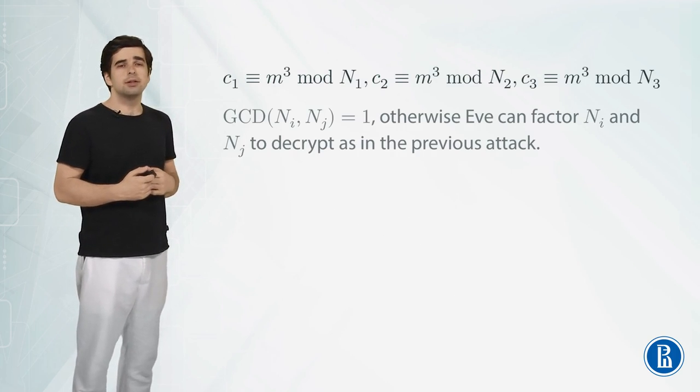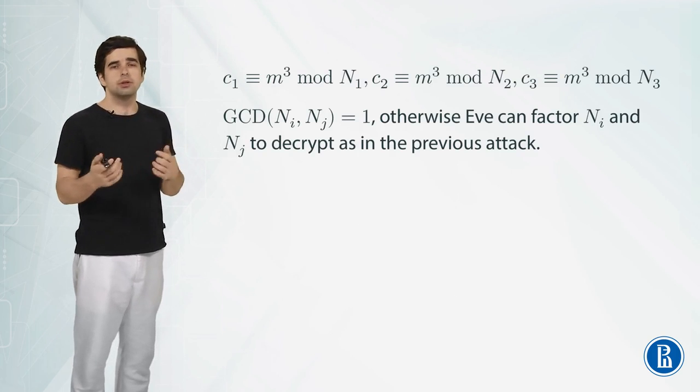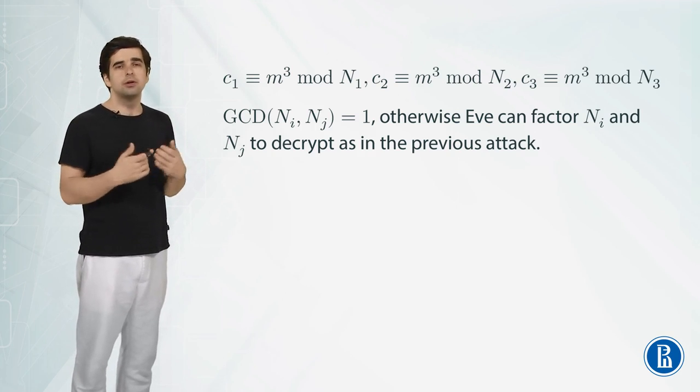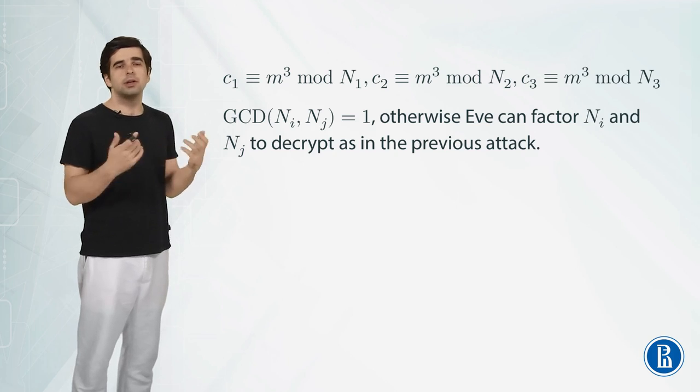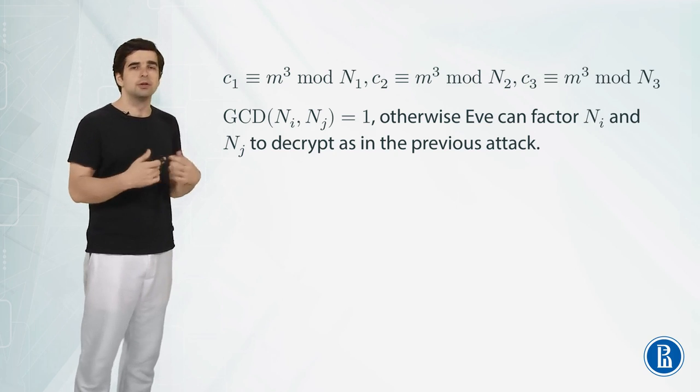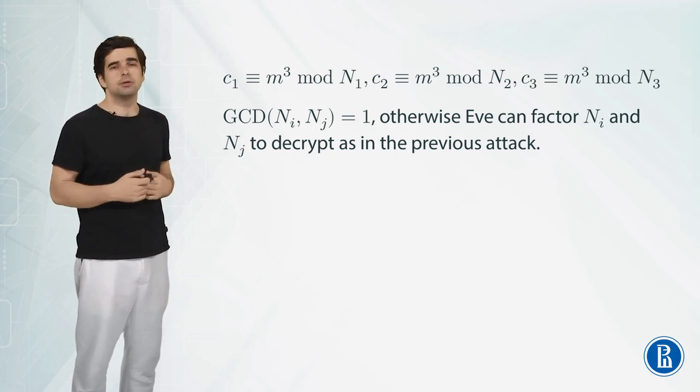So what happens next is that the greatest common divisor of any two different public keys is equal to 1. Otherwise we just learned in the previous video if some two public keys are not coprime then we can factor each of them and anyway decrypt the messages. So we assume that we somehow avoided this problem. These public keys don't have any common divisors. They are coprime.